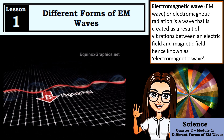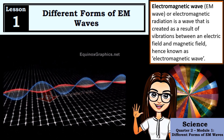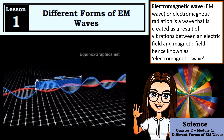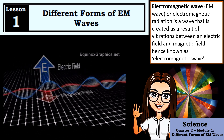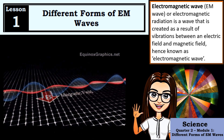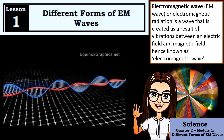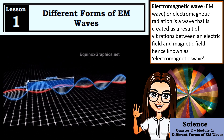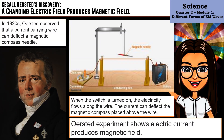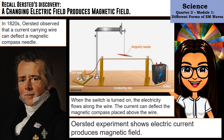An electromagnetic wave, or EM wave, or electromagnetic radiation, is a wave that is created as a result of vibrations between an electric field and magnetic field, hence known as electromagnetic wave. To understand how electromagnetic waves are created, let us recall Ersted and Faraday's experiments and discoveries.